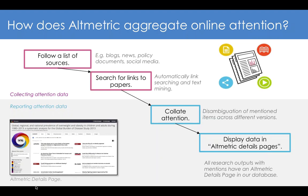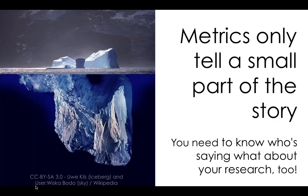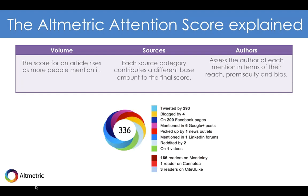You can click through each different source to see all the information and understand what people are actually saying. The really nice thing about our Kudos integration is that if you're sharing your Kudos page on Twitter, we'll also amalgamate the attention that has received with the attention of your original paper. Quite often when you come across altmetric data, you'll see it represented in this donut visualization. The colors of the donut represent the sources of attention — if you've been mentioned in the news, you'll see red in your donut; if you've been tweeted about, you'll see light blue.